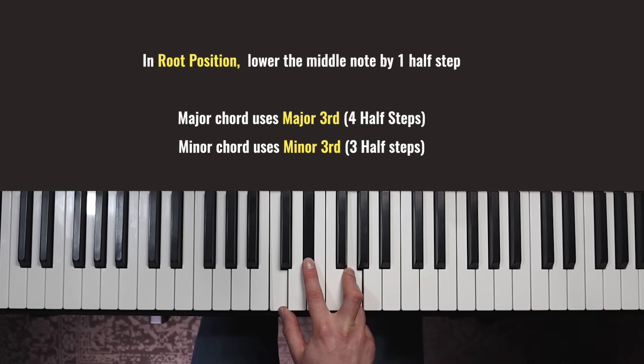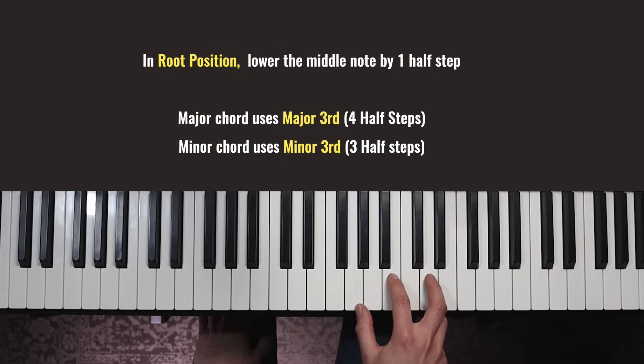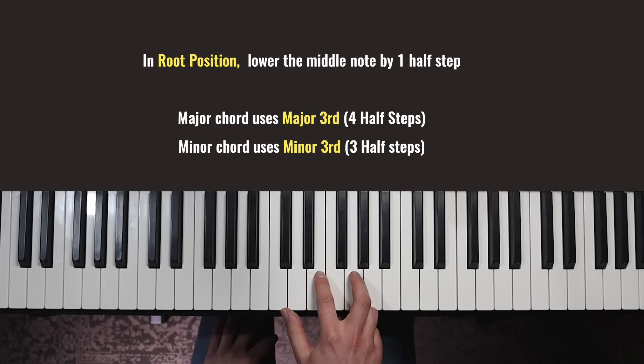Now the middle note is only three half steps or one and a half whole steps from the root. But remember, the outside notes are the same. The note we had before in the major chord, we'd call that a major third. And now the one we've moved it to is now called the minor third.